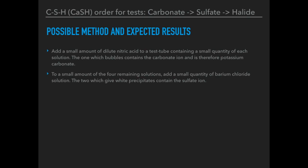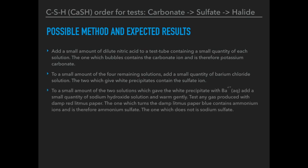To distinguish the two sulphates, we add a small quantity of sodium hydroxide solution to each of the two solutions that gave the white precipitate with barium ions, and warm gently. We then test any gas produced with damp red litmus paper held at the mouth of the test tube. The one which turns the damp litmus paper blue is producing ammonia, confirming the presence of the ammonium ion — so that is ammonium sulphate, and therefore the other one must be sodium sulphate.